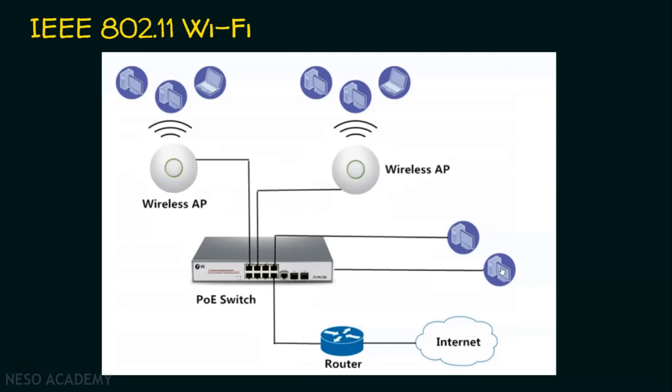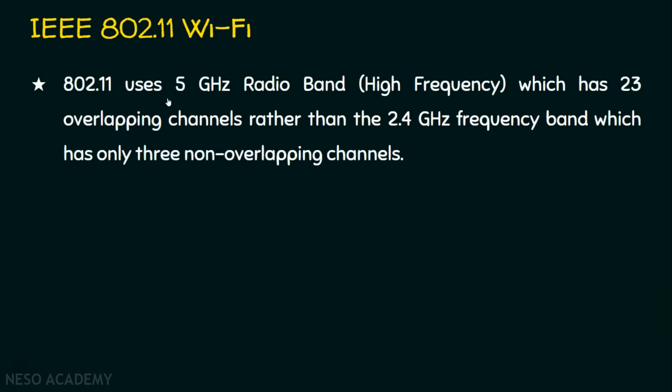Now let's see more on IEEE 802.11. It uses the 5 GHz radio band, which is a high-frequency band with 23 overlapping channels, rather than the 2.4 GHz frequency band, which has only 3 non-overlapping channels. IEEE 802.11 can operate at 5 GHz — giving 23 overlapping channels — or at 2.4 GHz, giving 3 non-overlapping channels. Either way, we can use IEEE 802.11 Wi-Fi technology for our wireless local area network.